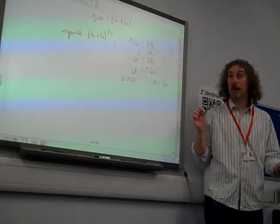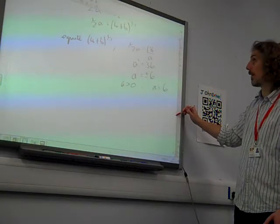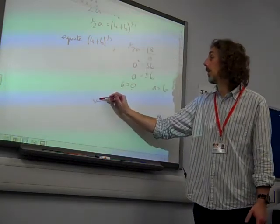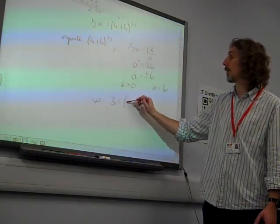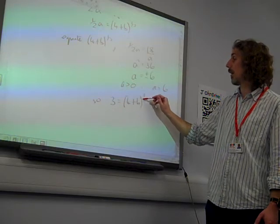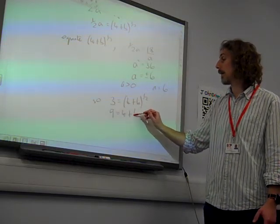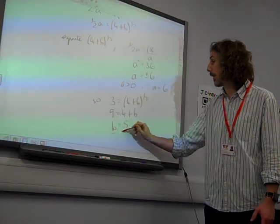And if we sub it back in, we can get b. Which one should we put it into? That one there. So 3 equals (4 plus b) to the half. 9 is 4 plus b. b equals 5.